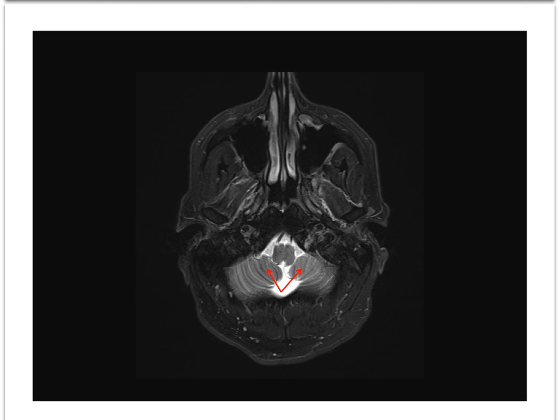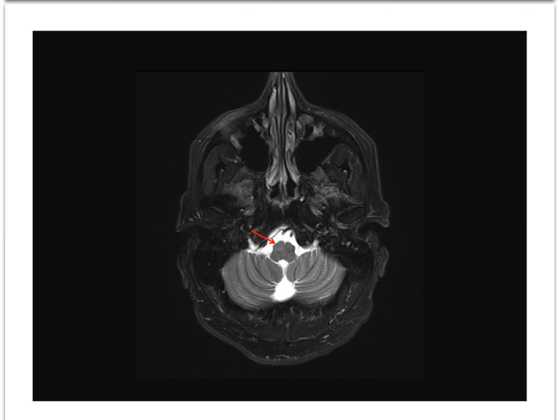Moving up another level, we still see cerebellar tonsils. As we continue further cephalad, the medulla takes on a more quadrilateral configuration due to prominence of the inferior olivary eminence. The restiform body adds bulk to the posterior medulla at this level.